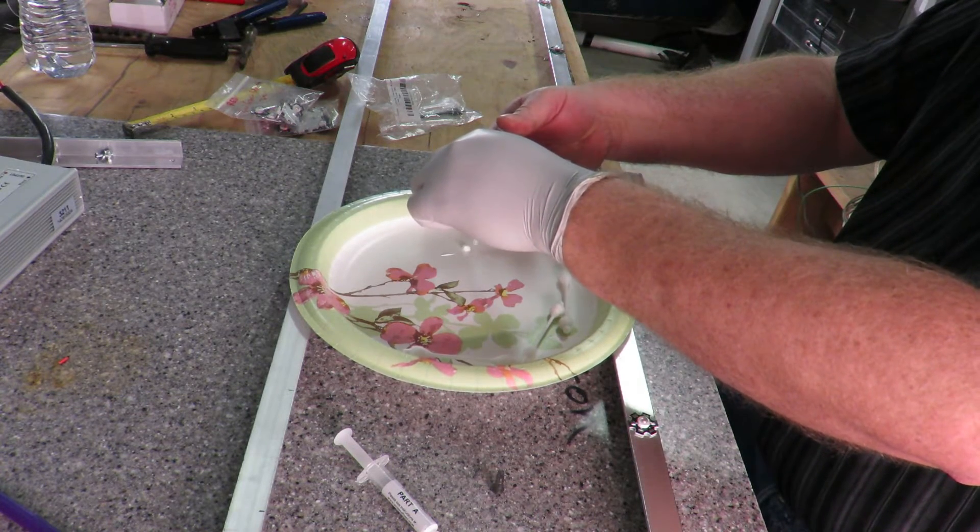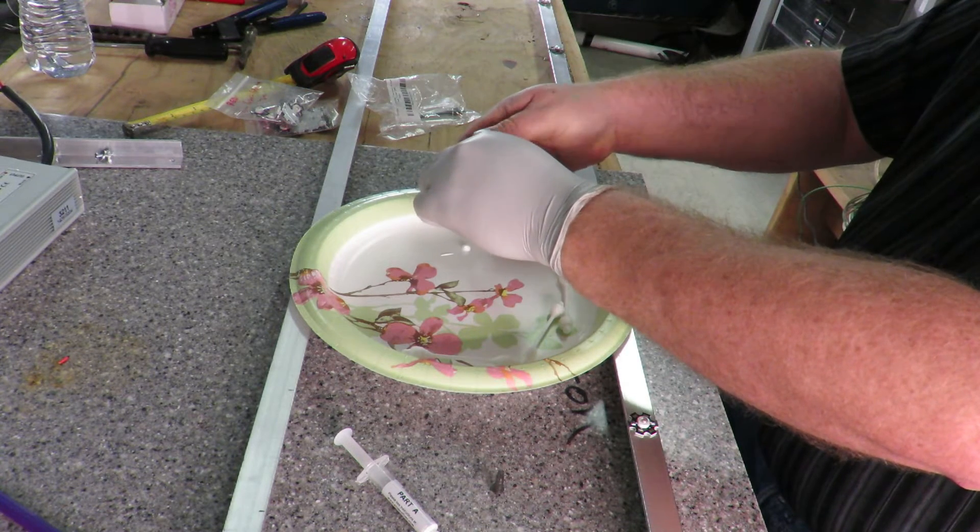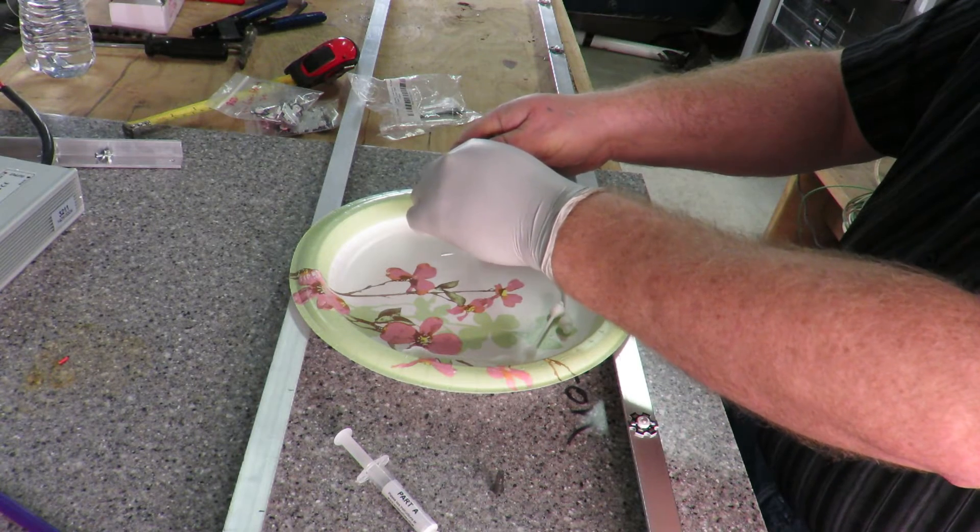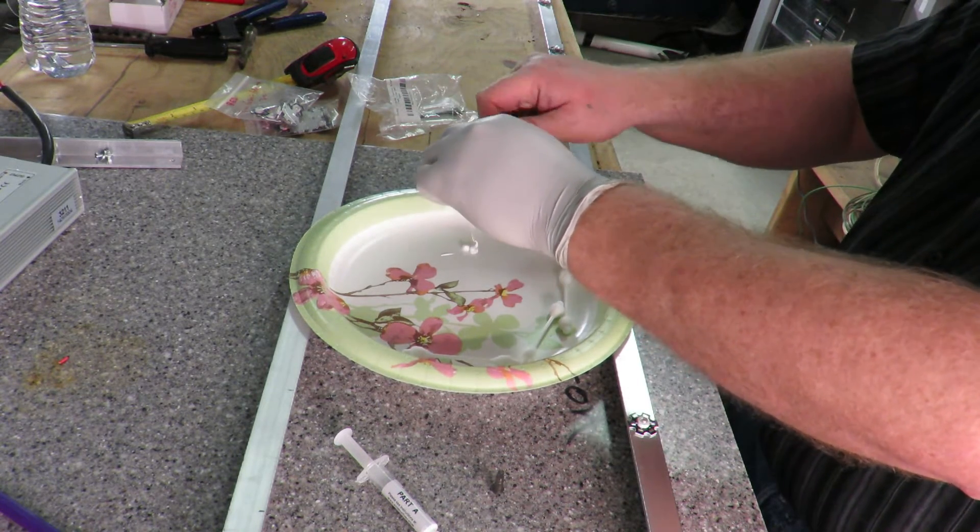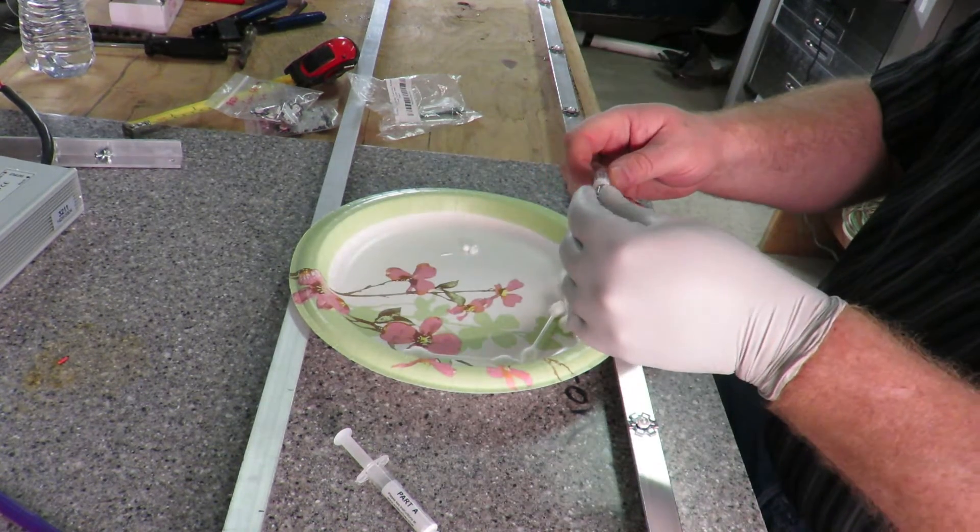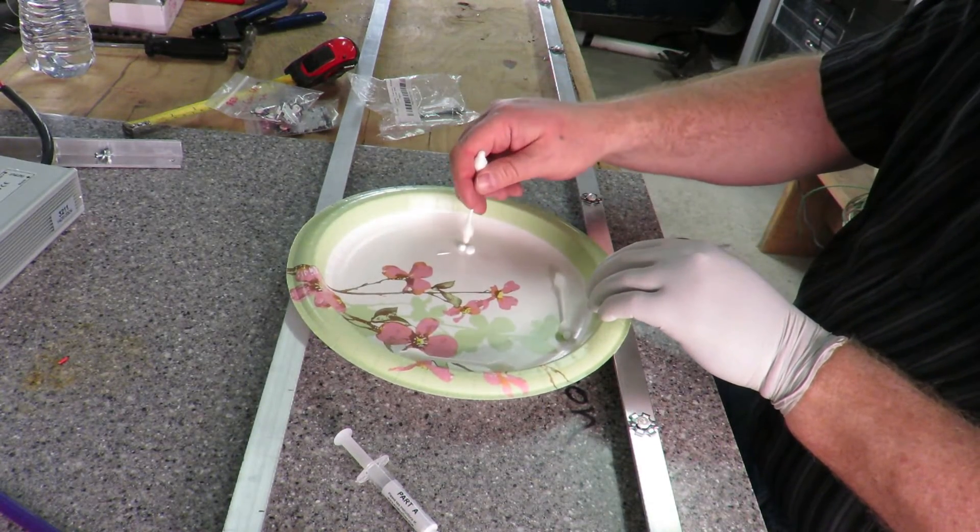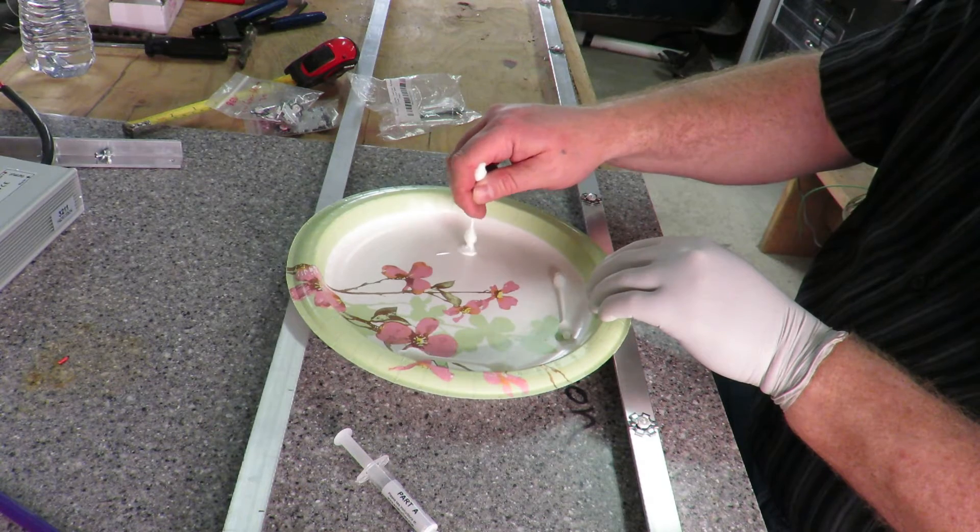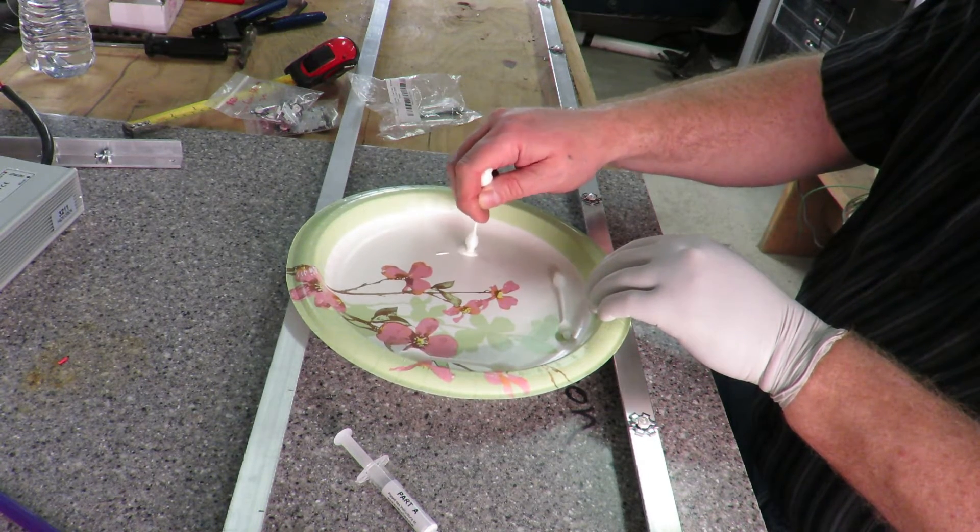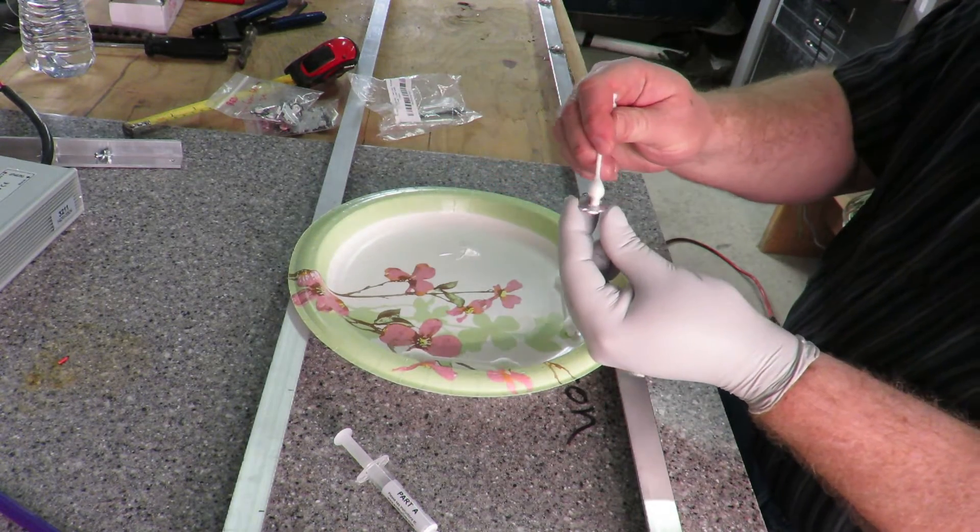So I've got part A down. I'm just going to apply part B. You're only using just a little bit, matching it one to one. You don't want to have too much in there. We're going to just give this a little mix. I'm just using Q-tips as an application. I'm giving it a good stir.